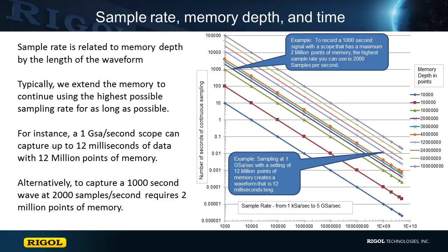Two good examples help us illustrate the relationship. To record a 1,000 second signal with a scope that has 2 megapoints of memory, the highest sample rate you can use is 2,000 samples per second. On the other hand, if you know you need 1 gigasample per second sampling and have a scope with up to 12 million points of memory, then the longest time you can continuously capture is 12 milliseconds.